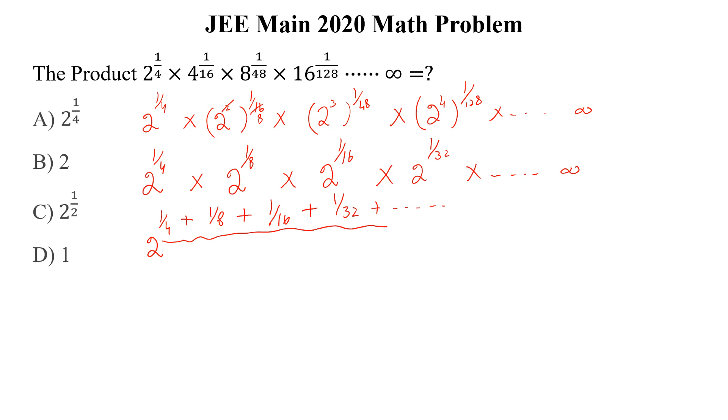And this is a geometric series. And the common ratio of this geometric series is 1 by 8 divided by 1 by 4, and this is equal to 1 by 2. And the first term of this geometric series is 1 by 4.